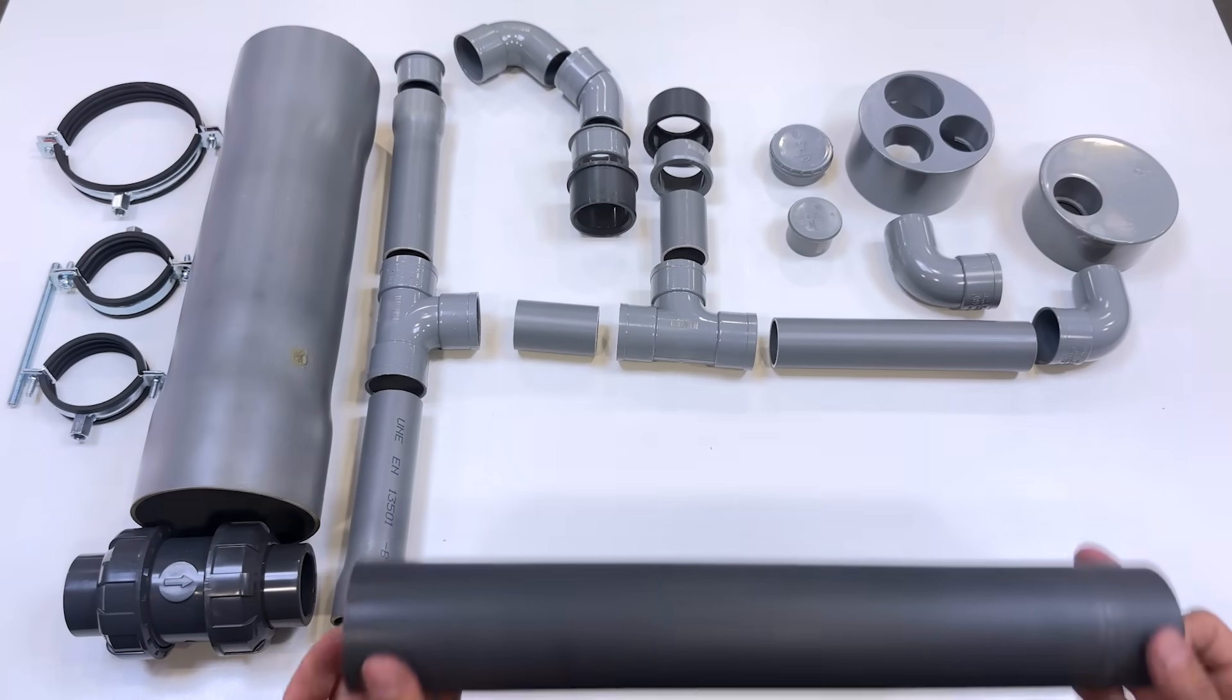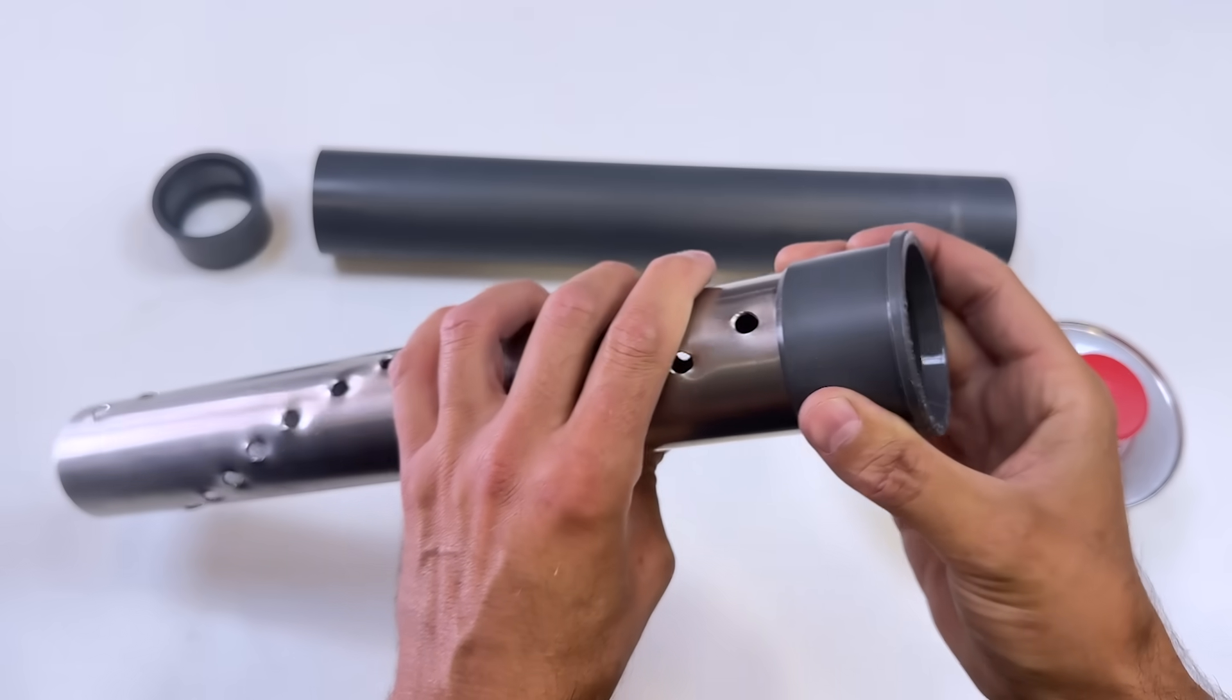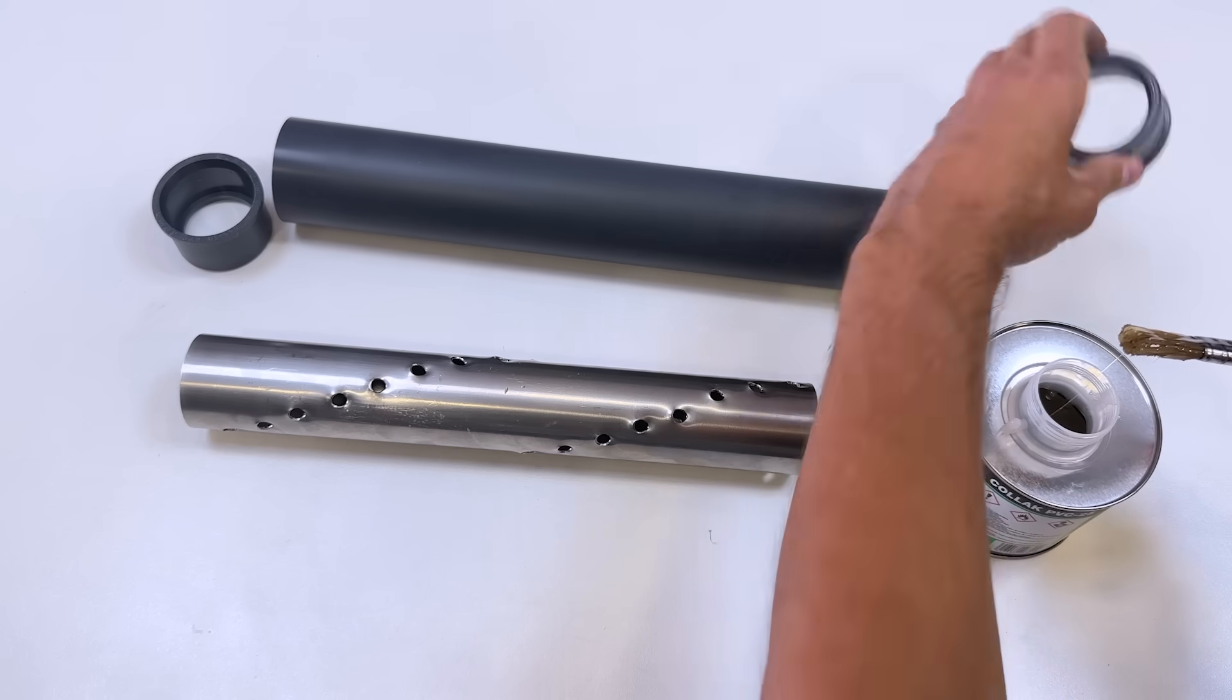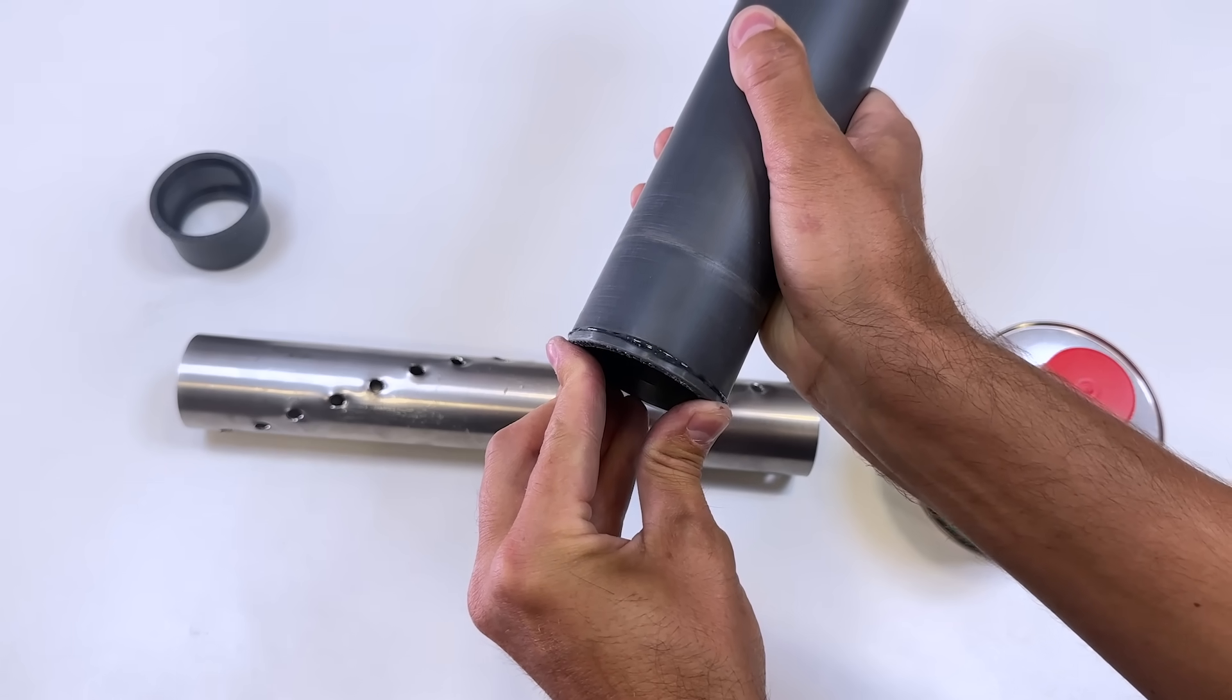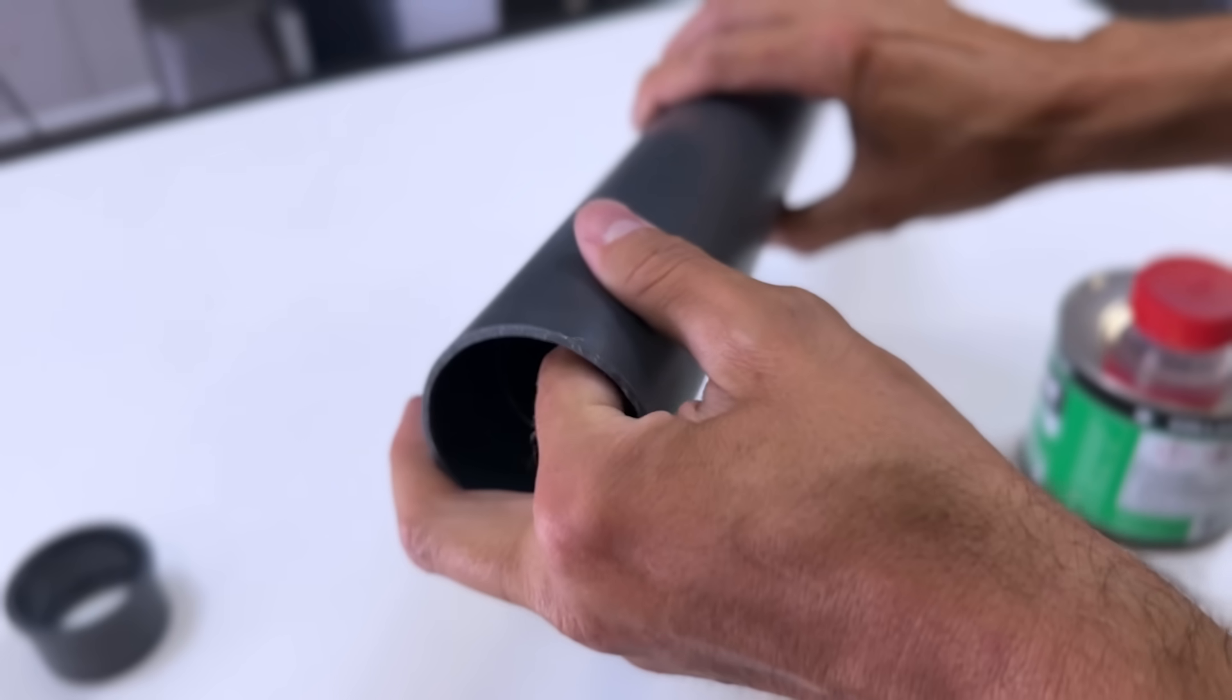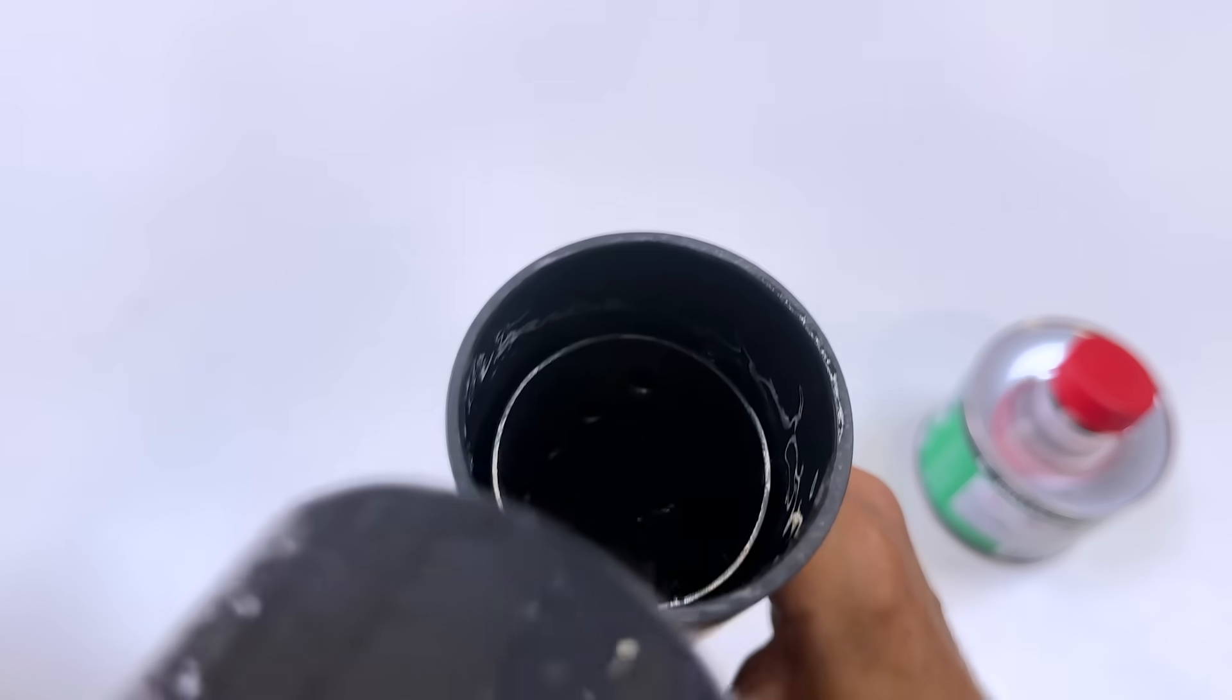We'll assemble all the elements with high-pressure PVC adhesive. The stainless steel pipe is perfectly centered with this PVC reducer with an outer diameter of 60 millimeters and an inner diameter of 50 millimeters. We glue one of these pieces to one end of a 60 by 400 millimeters long PVC pipe. We place the spirally perforated metal cylinder inside and we center it perfectly. Now we glue the other PVC piece so that the inner cylinder is perfectly fixed and centered in the pipe.